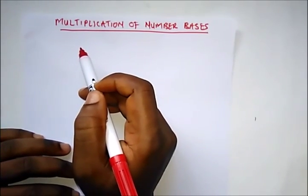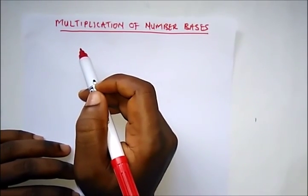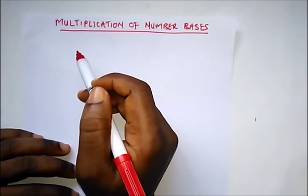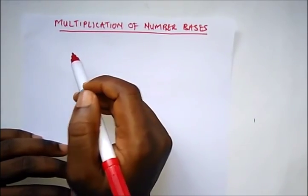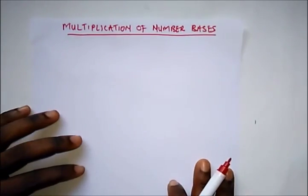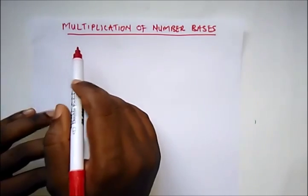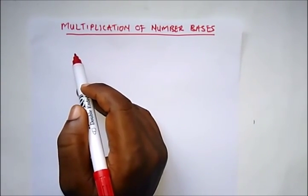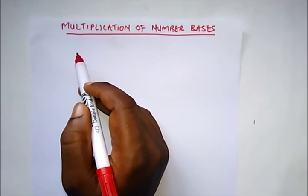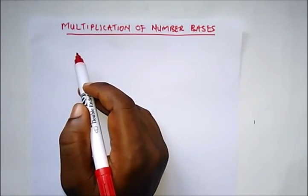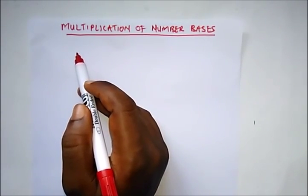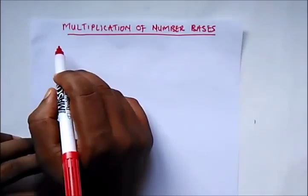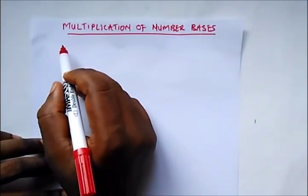Hello guys, welcome to Destined to Win Tutorials. Today we're going to be treating the multiplication of number bases. This is carried out by the addition technique — that is, counting the number of the base in a result before writing the remainder and transferring the whole number to the other digits.